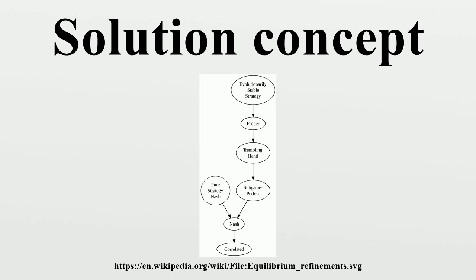Backward induction: There are games that have multiple Nash equilibria, some of which are unrealistic. In the case of dynamic games, unrealistic Nash equilibria might be eliminated by applying backward induction, which assumes that future play will be rational. It therefore eliminates non-credible threats because such threats would be irrational to carry out if a player was ever called upon to do so. For example, consider a dynamic game in which the players are an incumbent firm in an industry and a potential entrant to that industry.